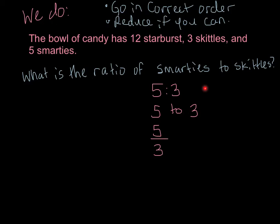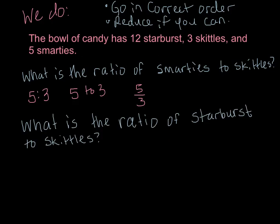Let's look at another one. What is the ratio of Starburst to Skittles? You'll notice I rearranged this. You've already written them in your notes, I was just running out of room. So you don't have to erase or rewrite the way you had it. What is the ratio of Starburst to Skittles? Go in the correct order. We've got Starburst, Starburst is 12. So we'll put 12, and we're going to write it all three ways. We're doing Starburst to Skittles. Skittles were three.